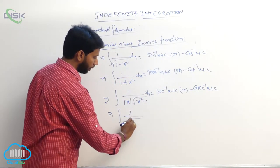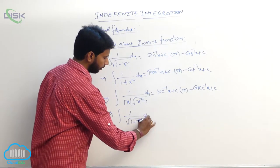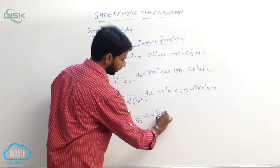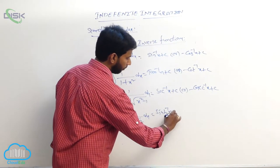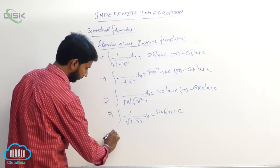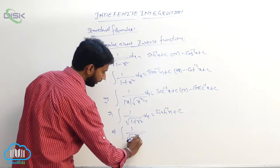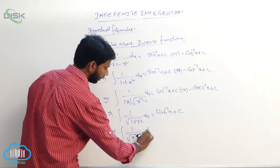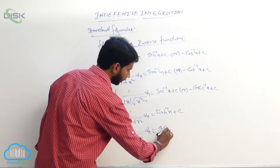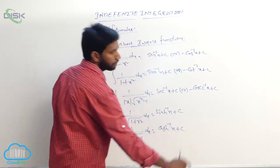Integral of 1/√(1 + x²) dx equals sinh⁻¹x plus constant. Integral of 1/√(x² - 1) dx equals cosh⁻¹x plus constant.